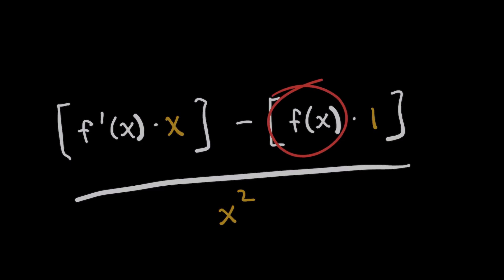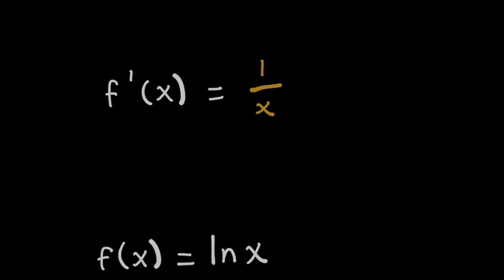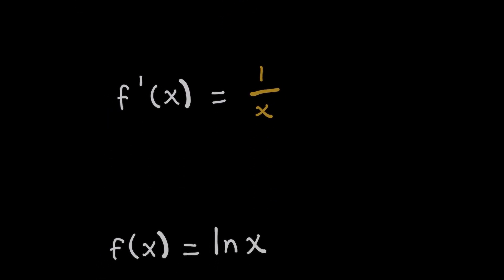But that's okay, because we know that we need to end up with 1 minus natural log of x over x squared. So if 1 must equal f prime of x times x, and then natural log of x must be f of x times 1, which is just f of x, well, that gives it away. That's pretty simple, right? f of x would have to be natural log of x.